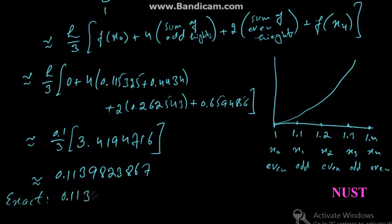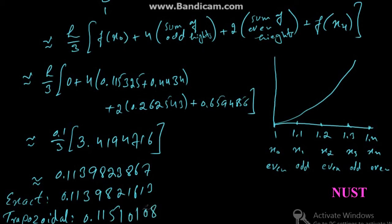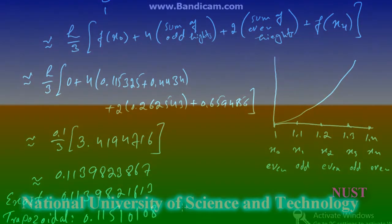The exact value is 0.1139821613, while the trapezoidal result is 0.11510108. Here we can clearly see that the Simpson's rule is more accurate than the trapezoidal due to the non-linear behavior inclusions. Thanks for watching.